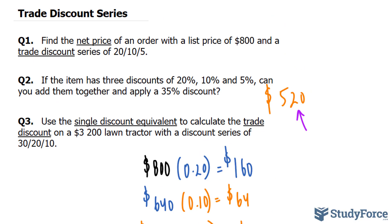Let's move on to question three. Use the single discount equivalent to calculate the trade discount on a $3,200 lawn tractor with a discount series of 30, 20 and 10. What they're asking here is the exact same thing as they asked in question one, except they want it done in all in one step.